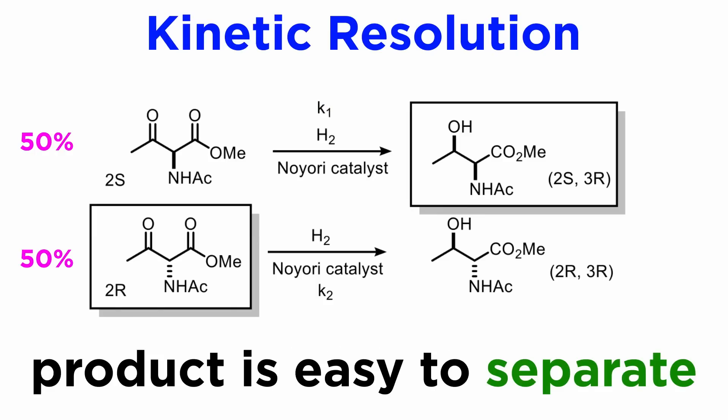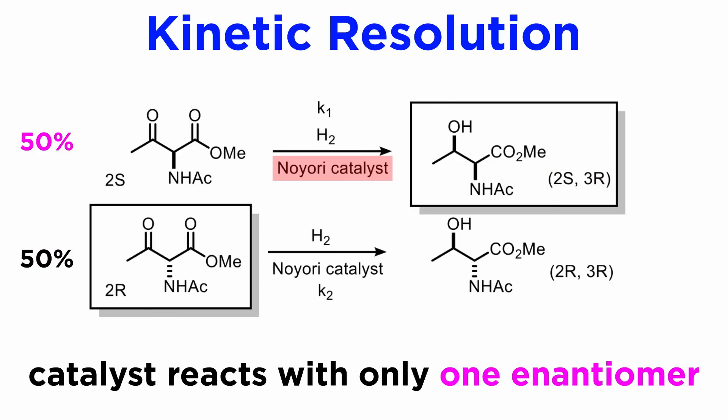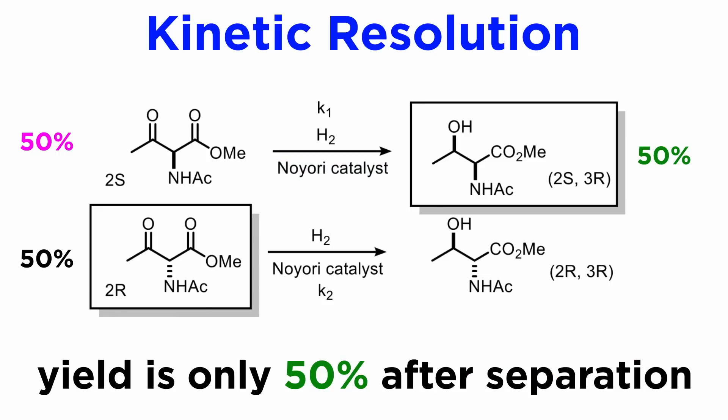We can separate them on the basis of polarity given the discrepancy between the hydroxyl on the product and the ketone on the substrate, yielding the pure 2S3R product and the enantiomerically pure 2R substrate. This is called kinetic resolution, because we are using a chiral catalyst which reacts with only one of the two enantiomers of the starting material. However, the yield is only 50%, and one must separate two materials at the end.